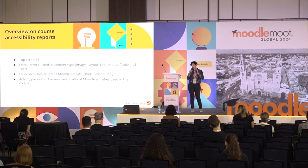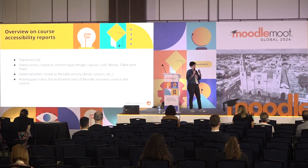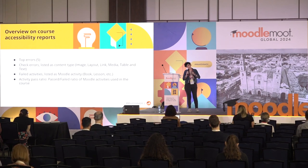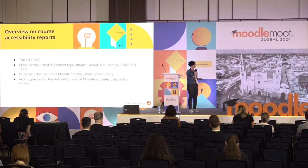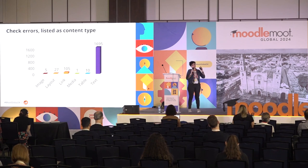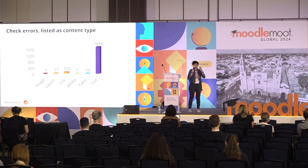After the Brickfield toolkit scans the courses, at the end of the test you have an accessibility report in which you can find the top errors listed by content type, the failed activities listed as Moodle activities, and also a ratio between the passed and failed activities. In this presentation I will give you information only about the top errors. As you can see in this slide, the most common errors are text-related errors. In the following slide you can also see what the Brickfield toolkit gives to us: the description of the errors, the impact of the errors for the learners, and also tips to solve the errors.